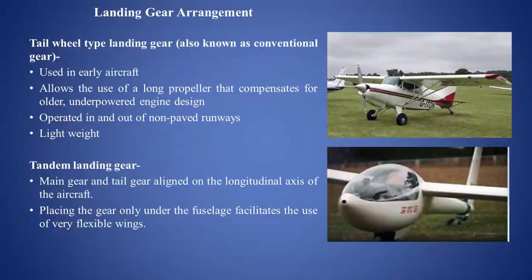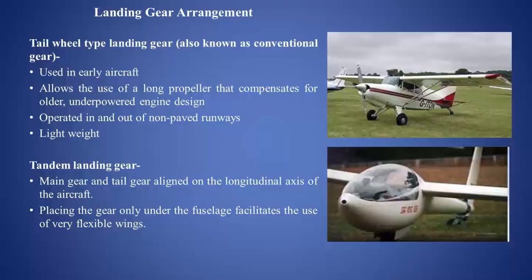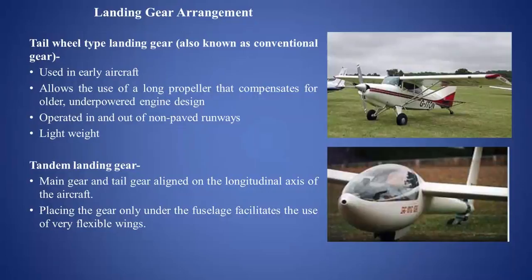Now, landing gear arrangement. In the first figure, you can see two main wheels in the front and a small third wheel on the tail — this is a tail-wheel type landing gear, also known as conventional gear. Used in early aircraft, it allows the use of a long propeller that compensates for older underpowered engine designs. This type of aircraft is operated in and out of non-paved runways and is also very lightweight. So the basic configuration is two main wheels and a tail wheel.